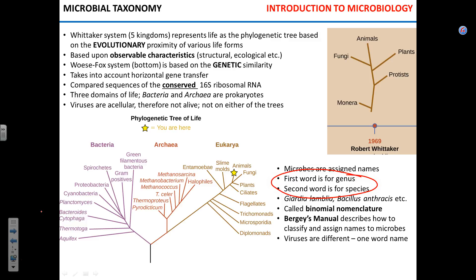In the microbial world, the nomenclature is the same, although distinguishing species is a bigger problem because microbes do not have sexual reproduction — most of them don't, in a traditional way. Bacteria definitely don't have sexual reproduction. But the names are the same. For example, Staphylococcus aureus and Staphylococcus epidermidis, the microbe normally dwelling on your skin, belong to the same genus but are very different species.